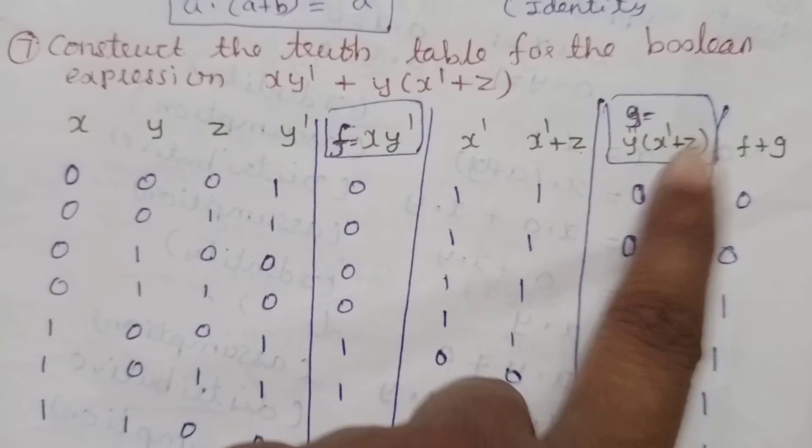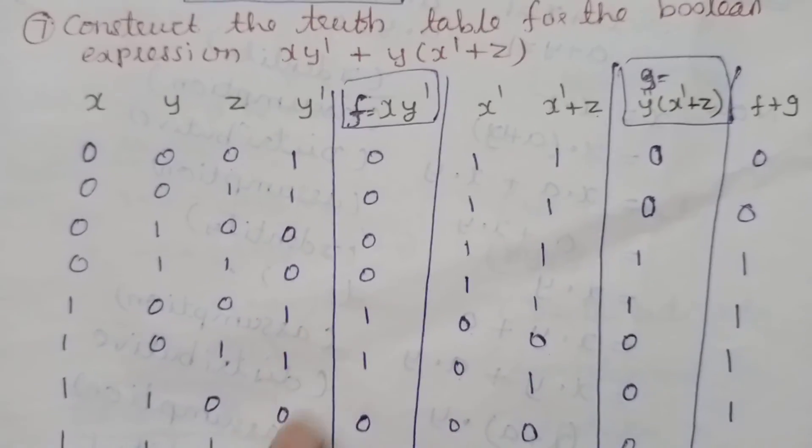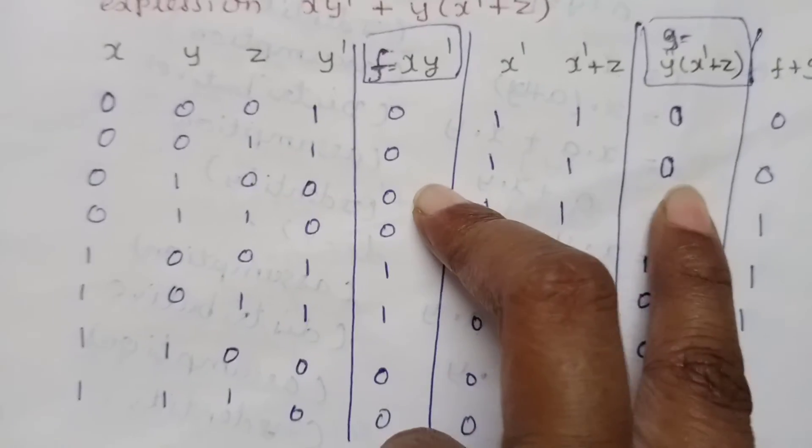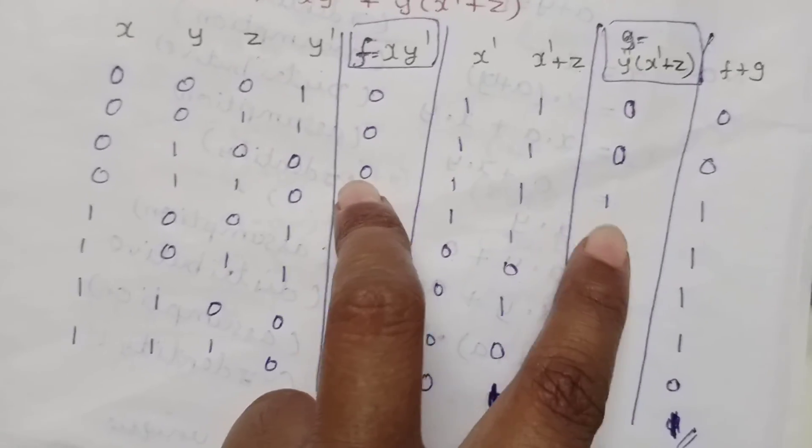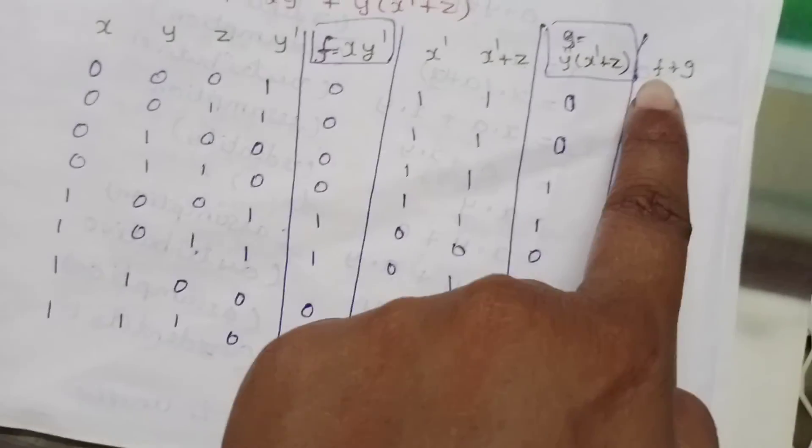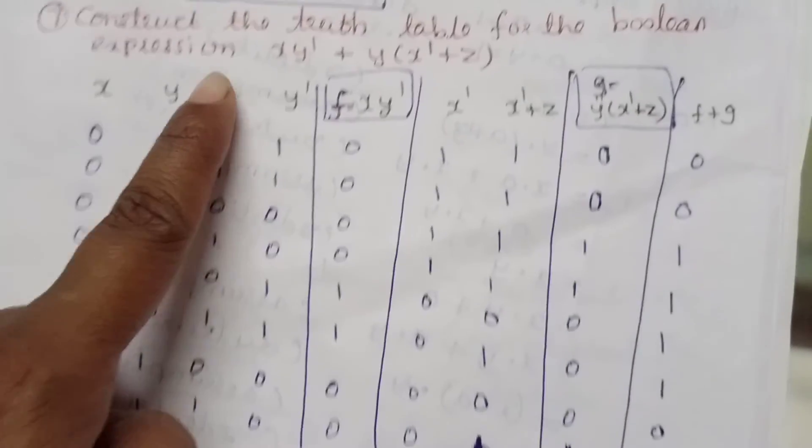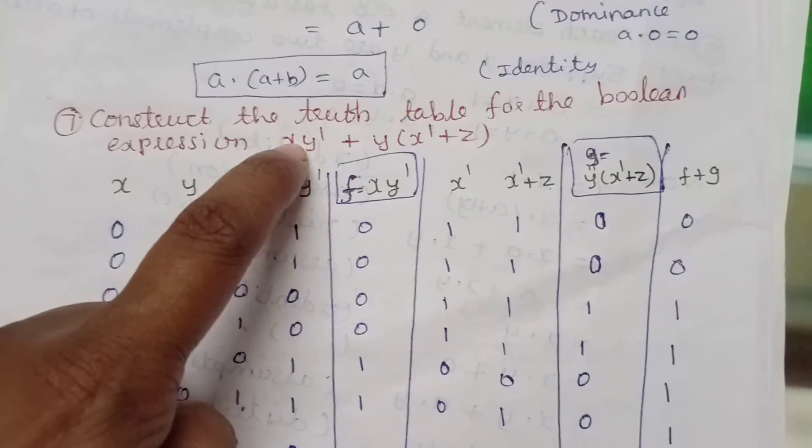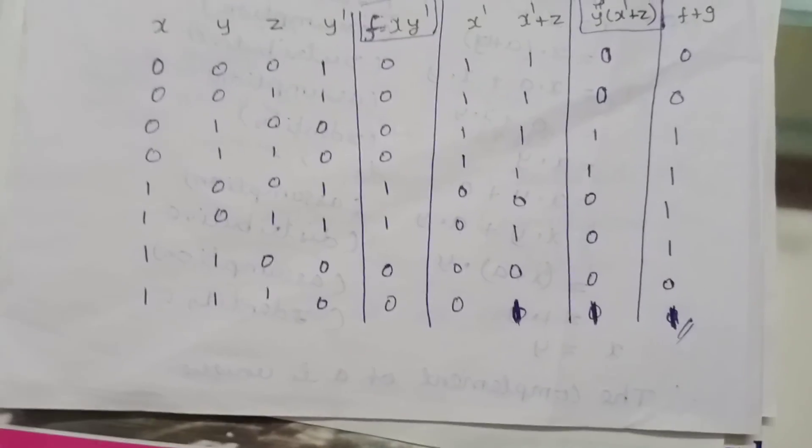If you add this, you can add 1. If you add 1, it is 1. If you add 0, it is 0. If you add 0, it is 1. The last column represents the expression of the given Boolean. Now this is the truth table. Thank you.